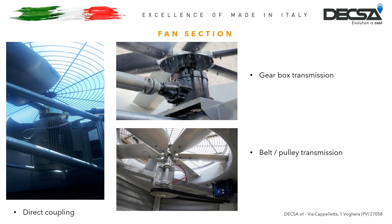Now let's proceed with the inspection of the fan section. We can have three different situations. The first is direct coupling — motor and fan are directly coupled. The second is gearbox transmission, where the motor is connected to the gearbox by means of a coupling joint. In the gearbox, the oil inside is to be replaced once a year: unscrewing the cap in the lower part allows the old oil to drain out, and removing the cap in the upper part allows new oil to be inserted. If you need information on the type and quantity of oil to be used, contact us.